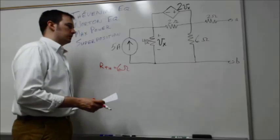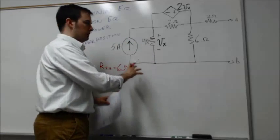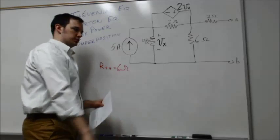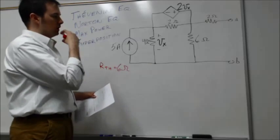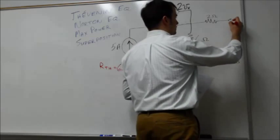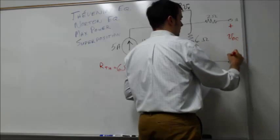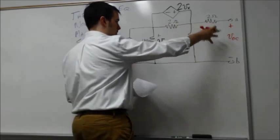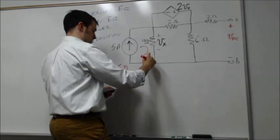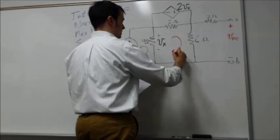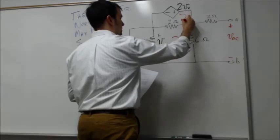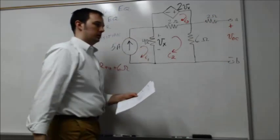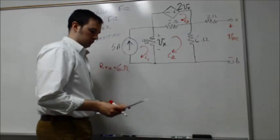Now, with the original circuit restored, we need to find the Thevenin equivalent voltage. We already know R_TH = 6 ohms. We now determine the open-circuit voltage V_oc between terminals a and b using mesh current analysis again.